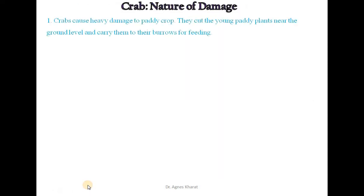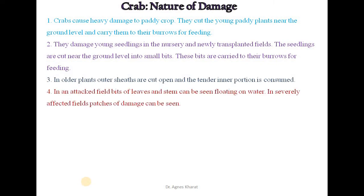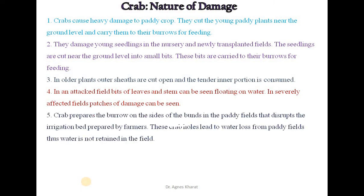What is the nature of damage caused by crabs? Crabs cause heavy damage to paddy crops. They cut the young paddy plants near the ground level and carry them to their burrows for feeding. They damage young seedlings in the nursery and newly transplanted fields. The seedlings are cut near the ground level into small bits, which are carried to their burrows. In older plants, outer sheaths are cut open and the tender inner portion is consumed. In an attacked field, bits of leaves and stem can be seen floating on water. In severely affected fields, patches of damage can be seen. Crabs prepare burrows on the sides of the bunds in paddy fields, which disrupts the irrigation beds prepared by farmers, leading to water loss from the paddy fields.